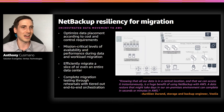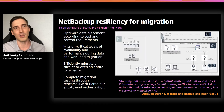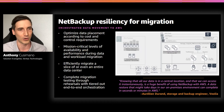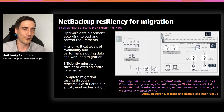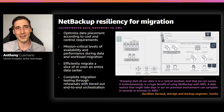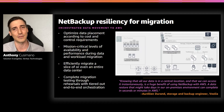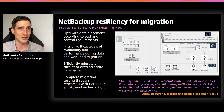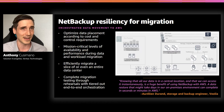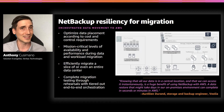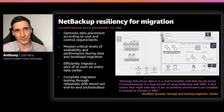What you can see on the right is an overarching architecture of our NetBackup Resiliency platform working hand-in-hand with AWS infrastructure. This allows you to optimize data placement according to cost, control, and requirements. We want to make sure you're translating your VM into the right EC2 instance and the right size to maximize performance. We also ensure mission-critical levels of availability and performance during data and workload migration — keeping it online as much as possible. And we can efficiently migrate a slice or even an entire data center.